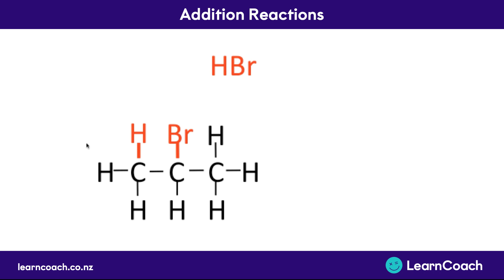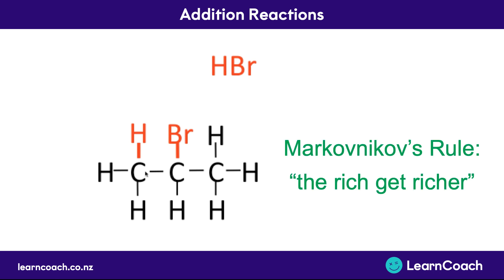You'll notice I've always put the single H on the left-hand side — and there's a reason for that. The hydrogen will attach to the carbon that has the most hydrogen atoms already attached. This is called Markovnikov's rule. His rule says that 'the rich get richer' — meaning the carbons which are already rich in hydrogens get even more. For example, the carbon on the end already has two hydrogens, so the hydrogen from HBr will attach to that carbon much more often than to the middle carbon, which only has one hydrogen bonded to it already. That middle carbon is more likely to get the Br atom attached.